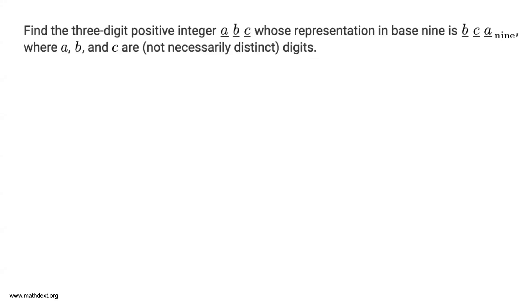Find the three-digit positive integer ABC whose representation in base 9 is BCA base 9, where A, B, and C are not necessarily distinct digits.